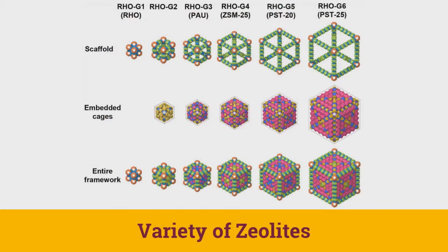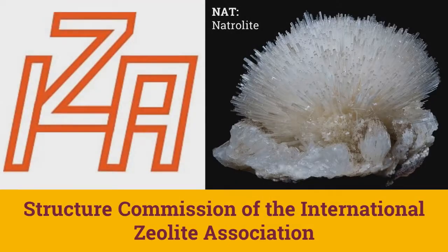Each zeolite mineral or zeolite mineral series has a different framework, and many more zeolites are being synthesized in the laboratory. There are nearly 150 structure types found so far, and to effectively study these, zeolites have their own commission called the Structure Commission of the International Zeolite Association, which assigns a three-letter code to all the different zeolites. For example, they have given the code NAT to Natrolite.